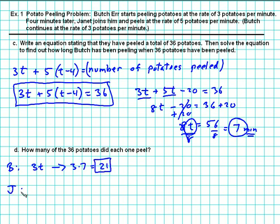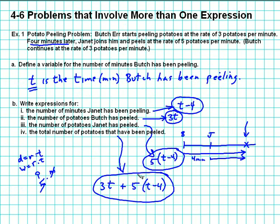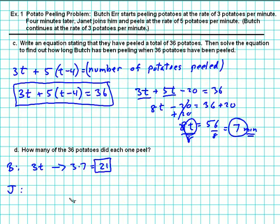How many did Janet peel? Janet peeled 5 times t minus 4. Well, t we now know is 7 minutes, so 5 times 7 minus 4. Well, 7 minus 4 is 3, and 3 times 5 is 15.